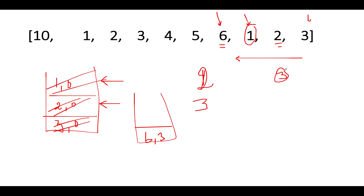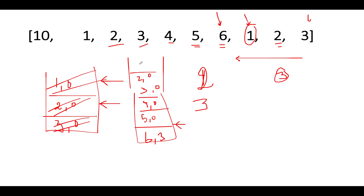Next we see 5 - 5 is lower than the peak element, so we simply add (5, 0) onto the stack. Next we see 4 - (4, 0) gets added. Next we see 3 - (3, 0) gets added because the current value is lower than the peak. 2 is again lower, so (2, 0) gets added. Next we see 1 - (1, 0) gets added because 1 is lower than 2.